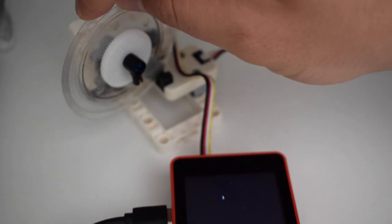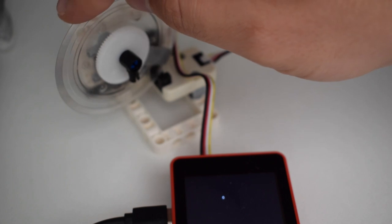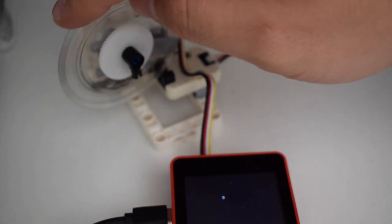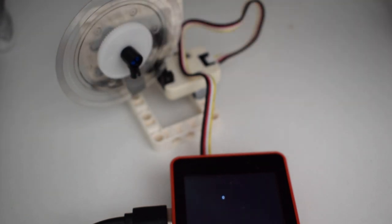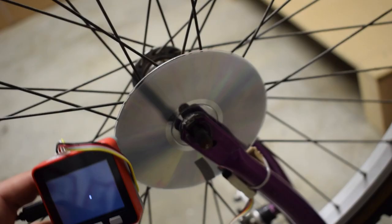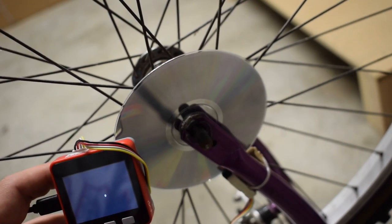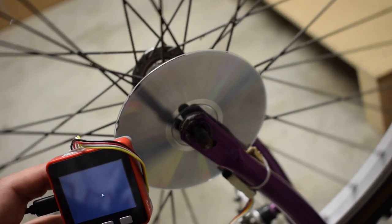I'll now demonstrate it with a simple wheel with a piece of tape on it that I've placed in this Lego enclosure. As you can see when the tape blocks the sensor we get a 1. Otherwise we'll get a 0. We can use this to check when our bicycle wheel has turned one full revolution.